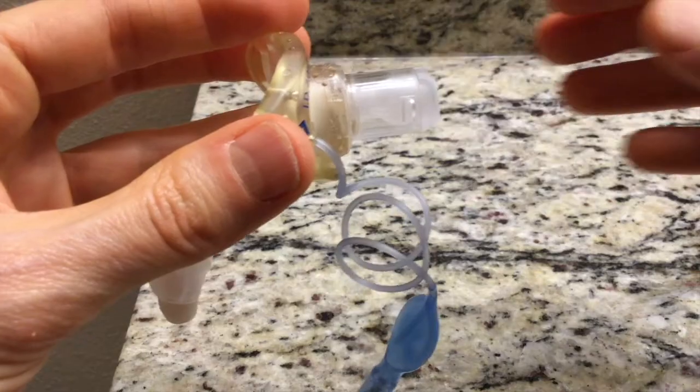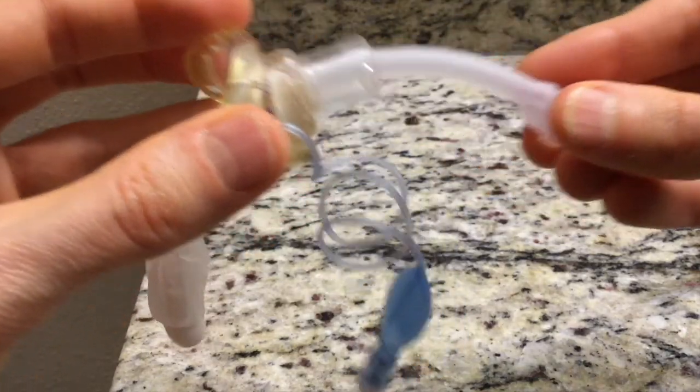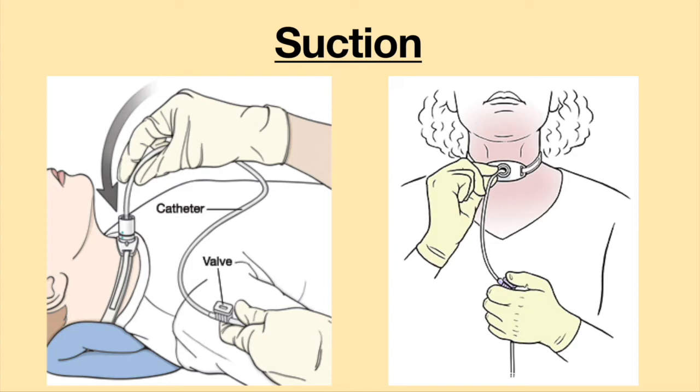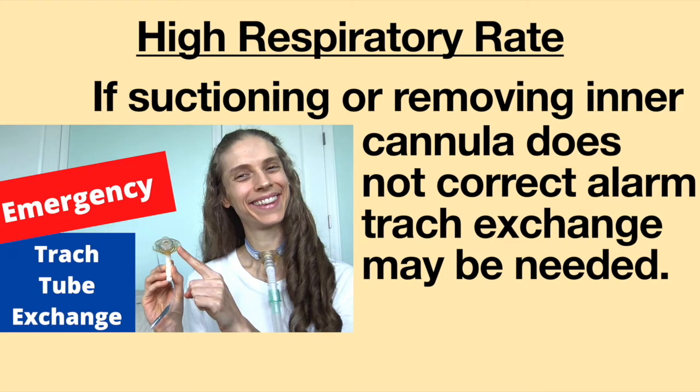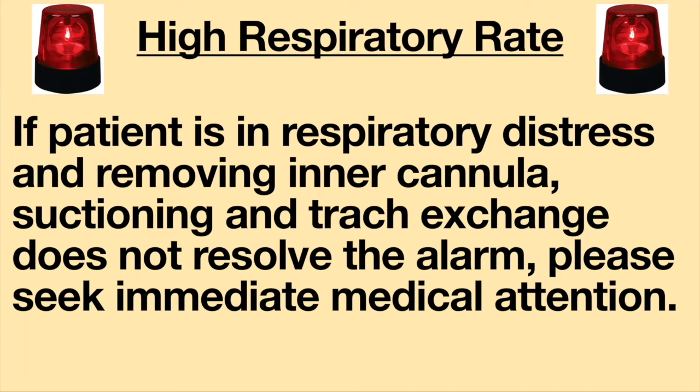To fix the situation, remove the inner cannula from the tracheostomy tube. Another solution is to suction the lungs. If suctioning or removing the inner cannula does not correct the alarm, a tracheostomy tube exchange may be needed. A high respiratory rate may also indicate a more serious health issue. If removing the inner cannula, suctioning the lungs, and changing out the tracheostomy tube does not resolve the high respiratory rate, please seek immediate medical attention.